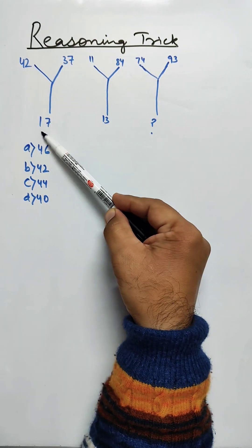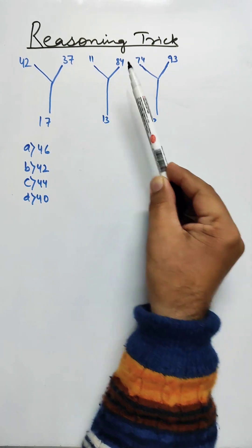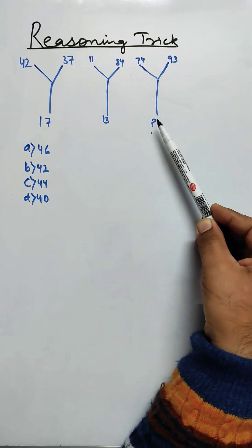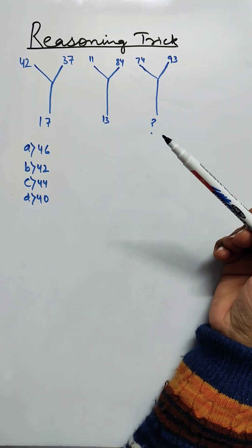42, 37, 17, 11, 84 is 13, 74, 93. We have to find this missing term.